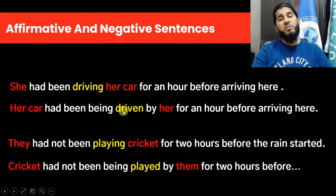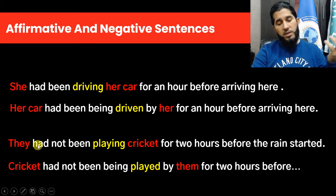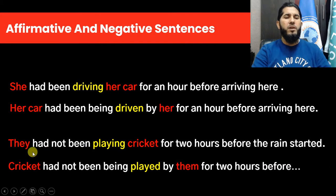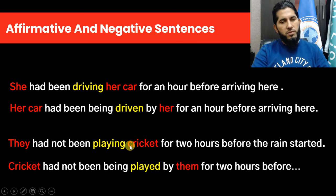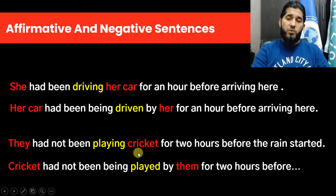You also change the verb to past participle or third form. For negative sentences, the structure is the same but the word 'not' is added after the auxiliary 'had' — in other words, 'not' comes between the two auxiliaries: 'hadn't been' or 'had not been.' For example: 'They had not been playing cricket for two hours before the wind started.'